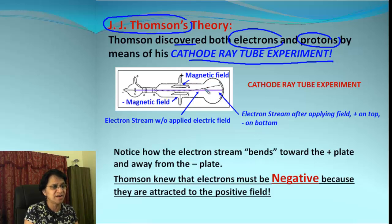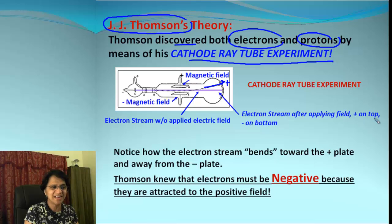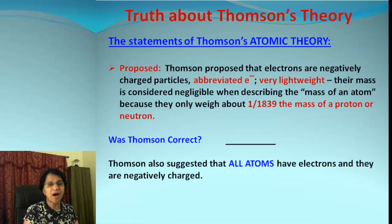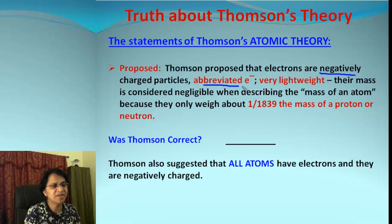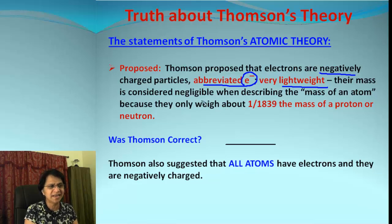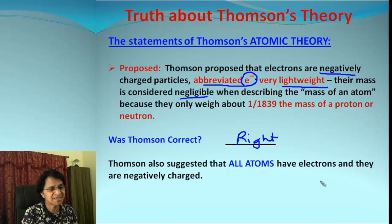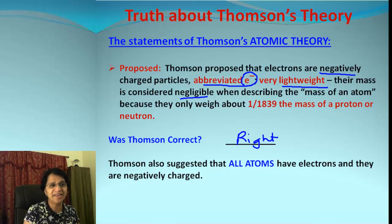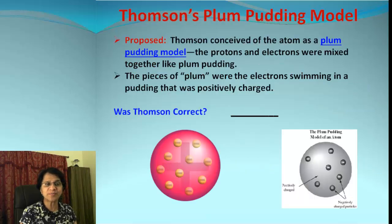When the electric field is applied, the electron stream bends toward the positive plate and away from the negative plate. Thomson knew that electrons carry negative charge because they are attracted to the positive field. Thomson proposed that we have negatively charged electrons, written as e⁻¹, and they are extremely lightweight with almost negligible mass — and he was absolutely correct. Thomson also confirmed that all atoms have electrons, and every electron is negatively charged.